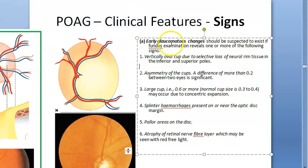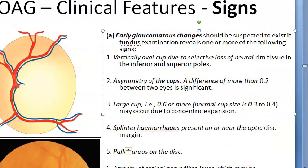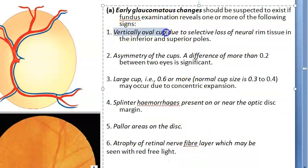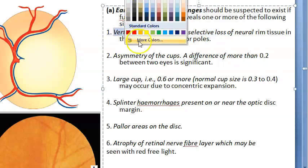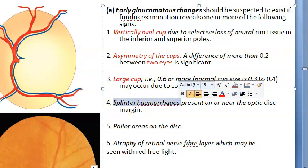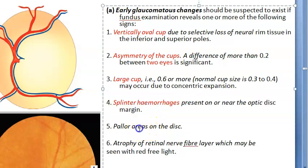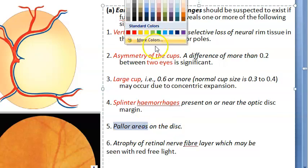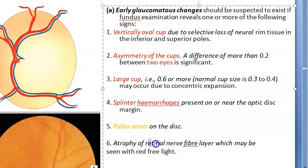Looking at the optic disc, there are six early glaucomatous changes to know. First, vertical oval cup due to selective loss. Second, asymmetry of the cups between the two eyes. Third, a large cup. Fourth, splinter hemorrhages. Fifth, pallor areas on the disc. Sixth, atrophy of the retinal nerve fiber layer (RNFL), which may be seen with red-free light.